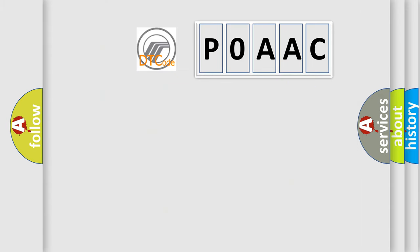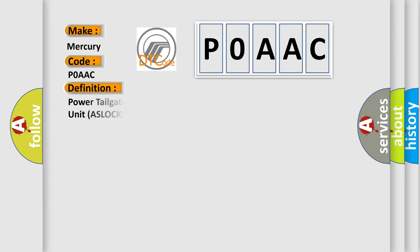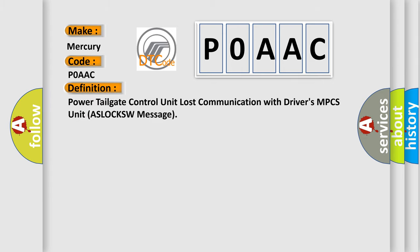The number itself does not make sense to us if we cannot assign information about what it actually expresses. So, what does the diagnostic trouble code P0AAC interpret specifically? For Mercury car manufacturers, the basic definition is: Power Tailgate Control Unit Loss of Communication with Driver's MPCS Unit ASLOCKSW Message.